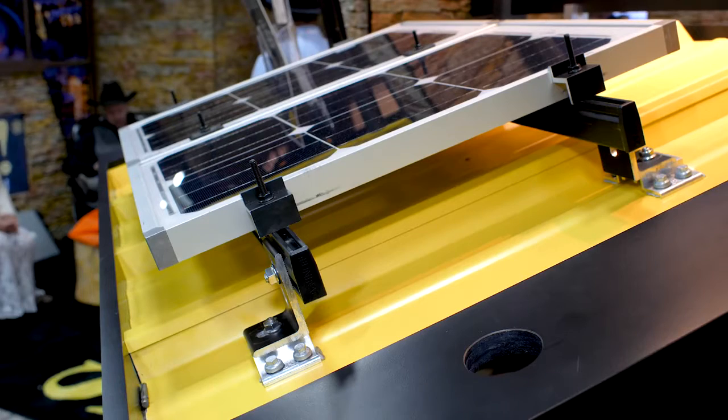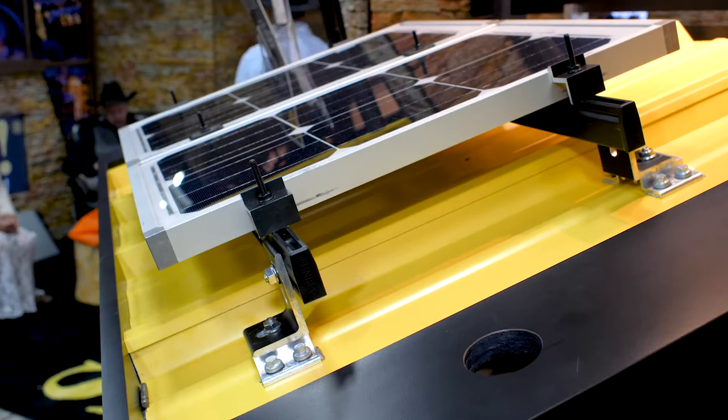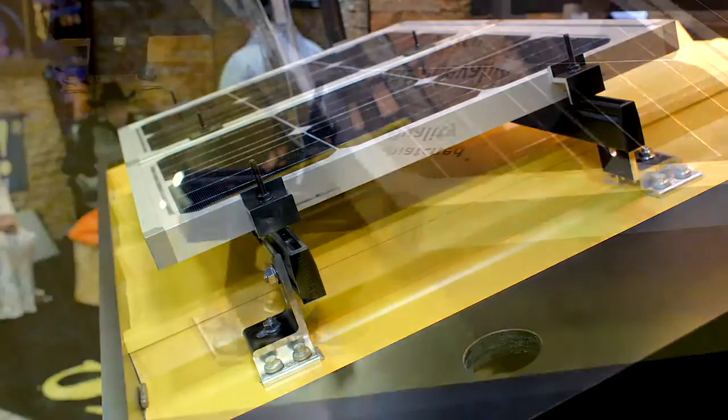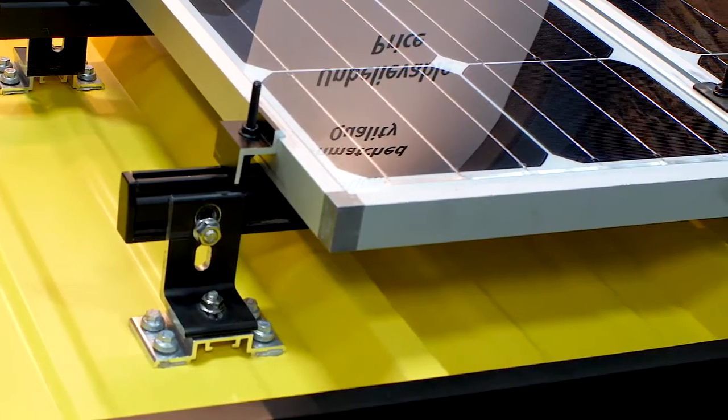If you are used to using rail solutions and that is your preferred method, S5 has just come out with the SolarFoot. The SolarFoot is the right way to attach rail mounted PV arrays to exposed fastener metal roofing such as R panel and AG panel.